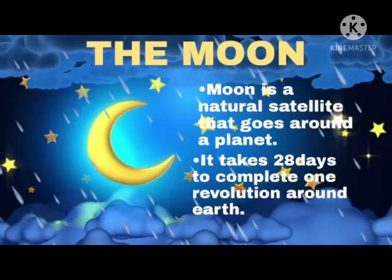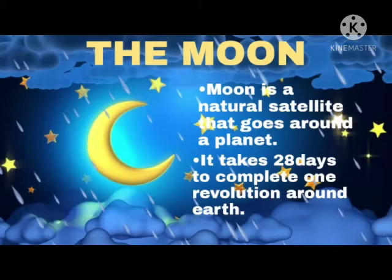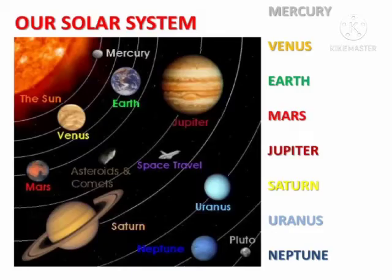Now let us talk about the moon. An object that goes around a planet is called a satellite. Moon is the natural satellite of earth. Moon takes around 28 days to complete one revolution around the earth.